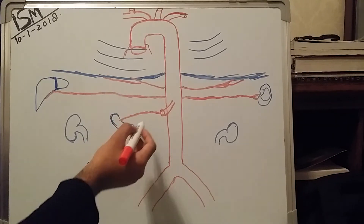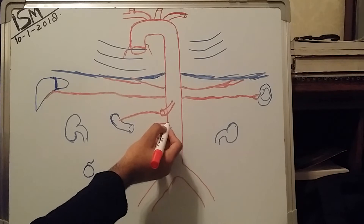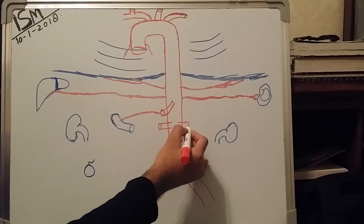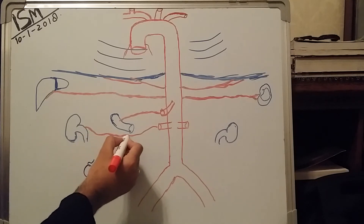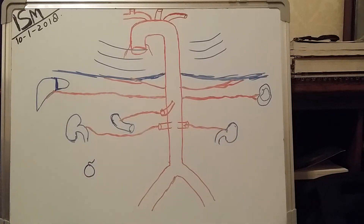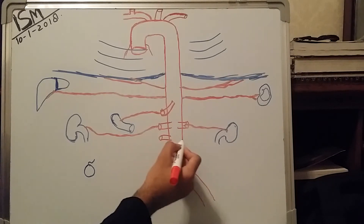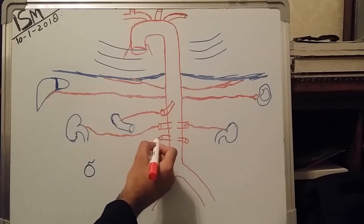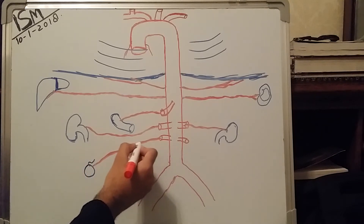After this we have two sets of renal arteries — one on each side — which provide blood supply to the renal system, that is the kidneys present on both sides of the body. After this, two sets of gonadal arteries originate which provide blood supply to the gonads and the genital organs on both sides.